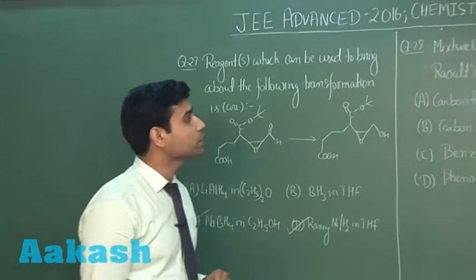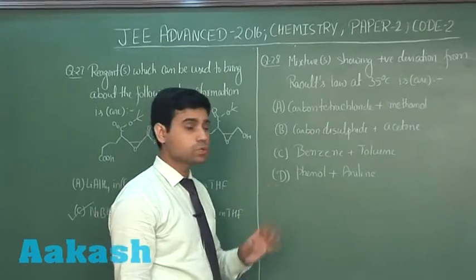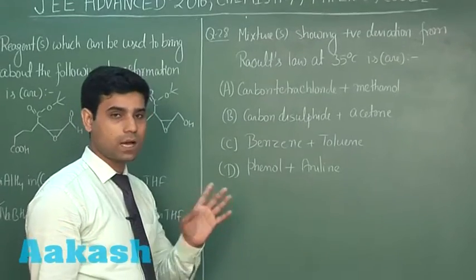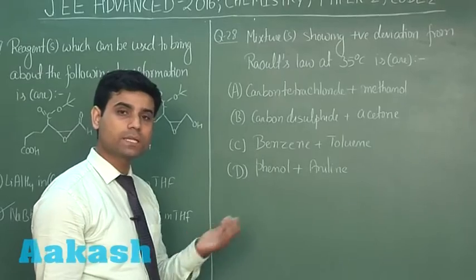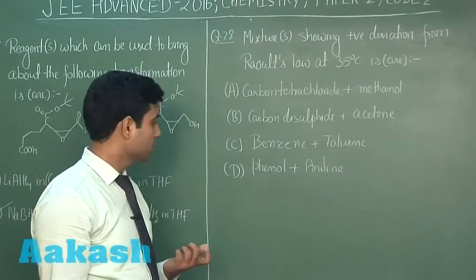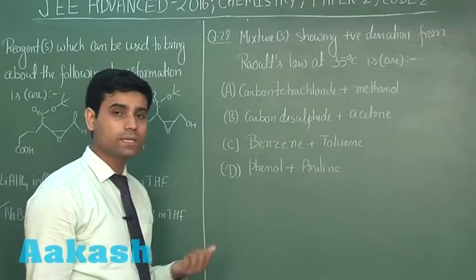Now let us move to question number 28, which says mixture or mixtures showing positive deviation from Raoult's law at 35 degree Celsius. The first option is carbon tetrachloride with methanol, second option is carbon disulfide with acetone, third option is benzene with toluene, and the fourth option is phenol with aniline.